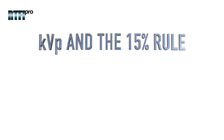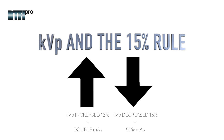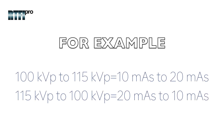KVP and the 15% rule: within an original exposure under the same variables, x-rays from KVP can follow the 15% rule. The 15% rule states that changing the KVP by 15% has the same effect as doubling the MAS or reducing the MAS by 50%. For example, increasing the KVP from 100 to 115 results in a beam intensity increase of 15%, which produces the same exposure to the film as increasing the milliampere seconds from 10 to 20.